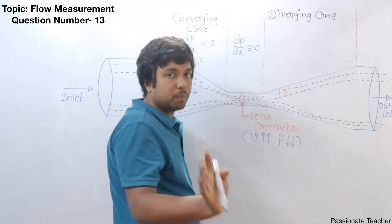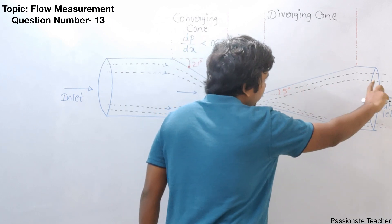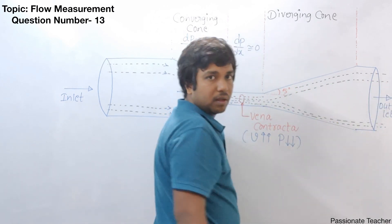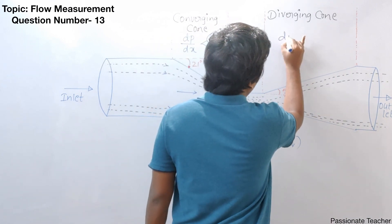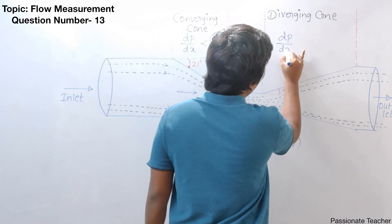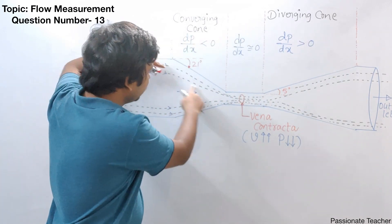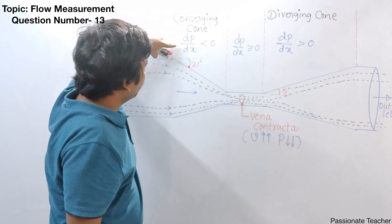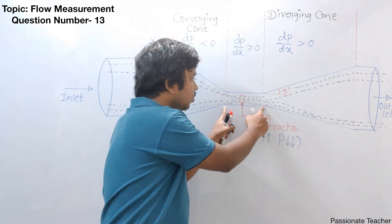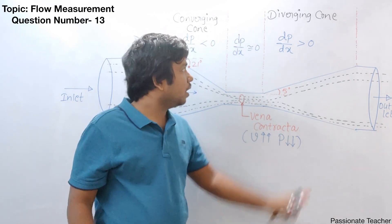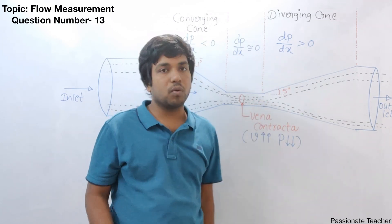Pressure gradient being zero does not mean that pressure is zero. The variation of pressure while the fluid is flowing in this particular length is zero, but pressure itself is not zero. When it comes to the diverging side, as the area of cross section seen by the fluid is slowly increasing, velocity will slowly decrease, and at the same time pressure will increase. That means dp/dx is now greater than zero.